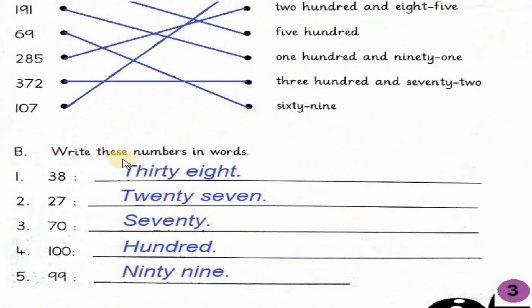Part B. Write these numbers in words. Numbers are given in digits and you have to write them in words. Number 1, 38. 38. Number 2, 27. 27. Number 3, 70. 70. Number 4, 100. Number 4, 100. Number 5, 99. Number 5, 99.